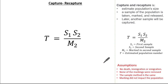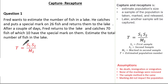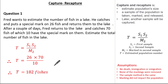Let's look at a past exam question. Fred wants to estimate the number of fish in a lake. He catches and marks 26 fish and returns them to the lake. After a couple of days, he catches 70 fish, of which 10 have the special mark. Using T equals S1 times S2 over M2, we substitute: 26 multiplied by 70, divided by 10, giving an estimated population of 182 fish.